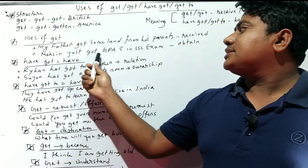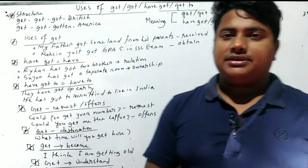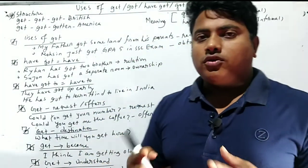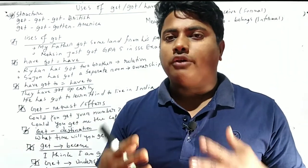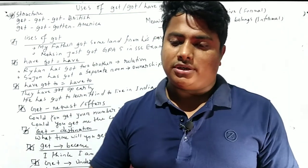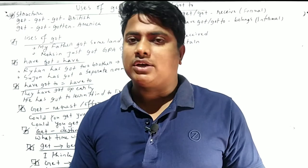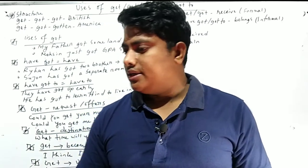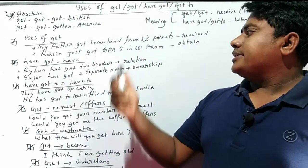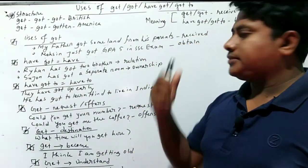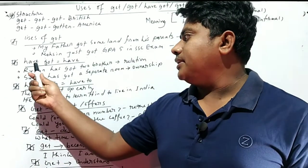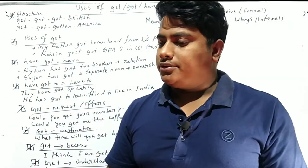Another example: Motion just got GPA 5 in the exam. Here, just got means to obtain. So in general senses, got is used for receive, and sometimes it's used for obtain. Have got - in informal words, in practical life we use have instead of have got.